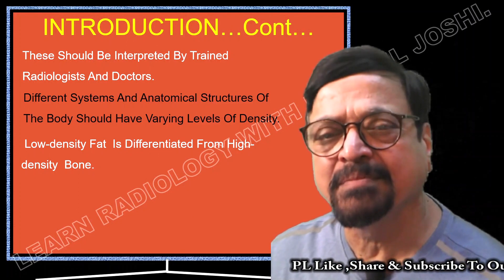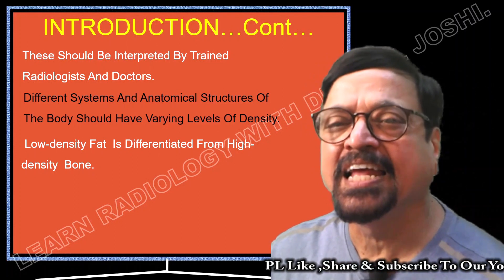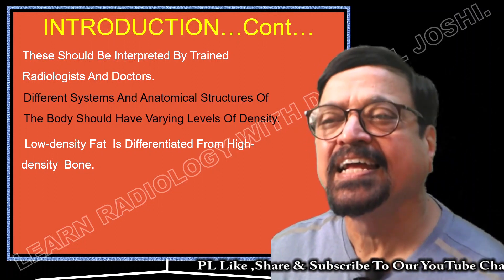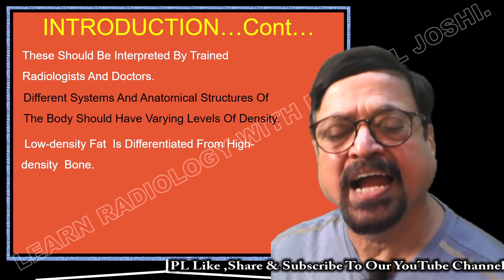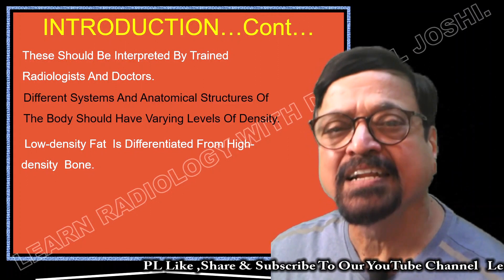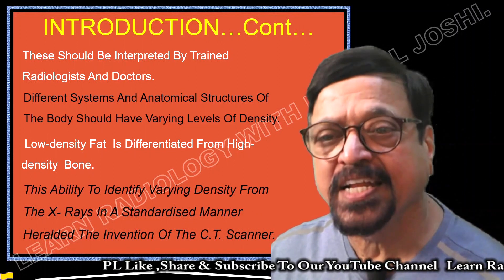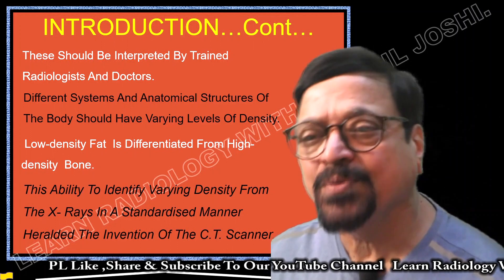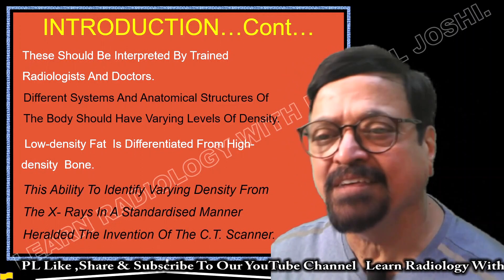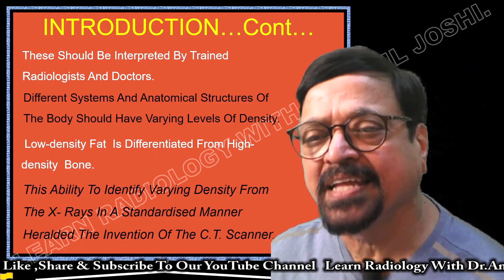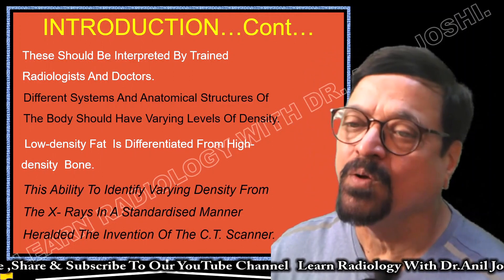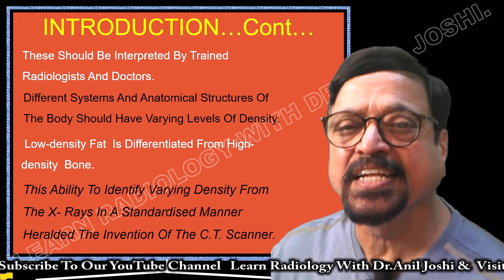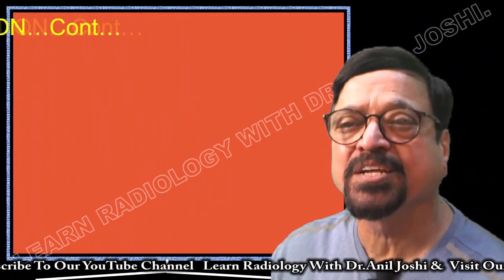Different tissues — muscles, air, fat — each look different. Low density fat is differentiated from high density bone because they have different density values; on the scale, these are different. This ability to identify varying densities from X-rays in a standardized manner heralded the invention of the CT scanner. Unless we have tissue differentiation, it is of no use to have just a section of any structure.